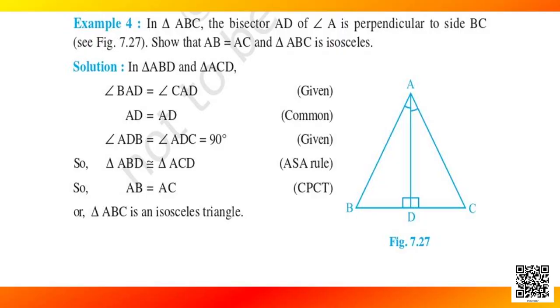Now let us take some examples to apply this result. Students, let us discuss example 4. It says: in triangle ABC, the bisector AD of angle A is perpendicular to side BC — show that AB is equal to AC and triangle ABC is isosceles. So let me draw the diagram as given in your book. You can clearly see that triangle ABC is there and AD is the bisector of angle A, which means AD is perpendicular to side BC. Let us try to solve and find out about AB and AC.